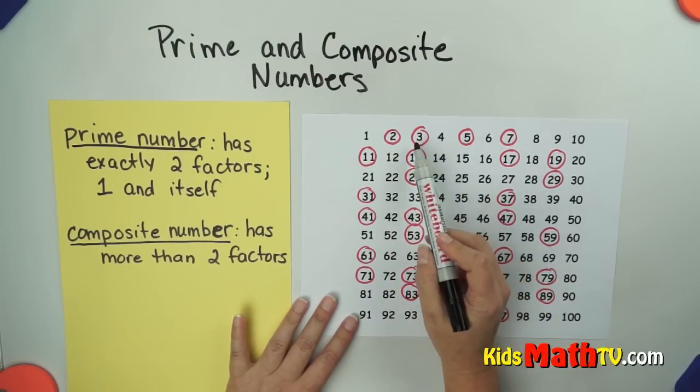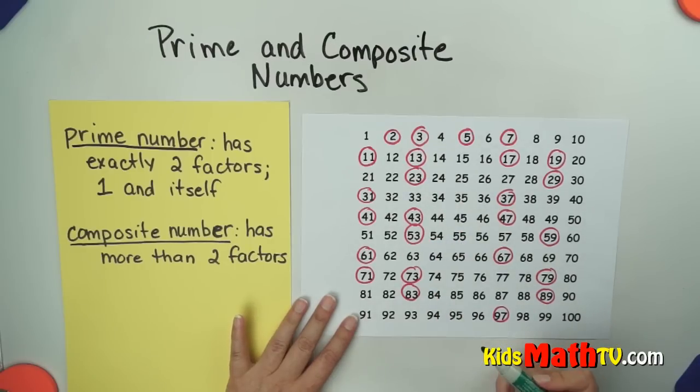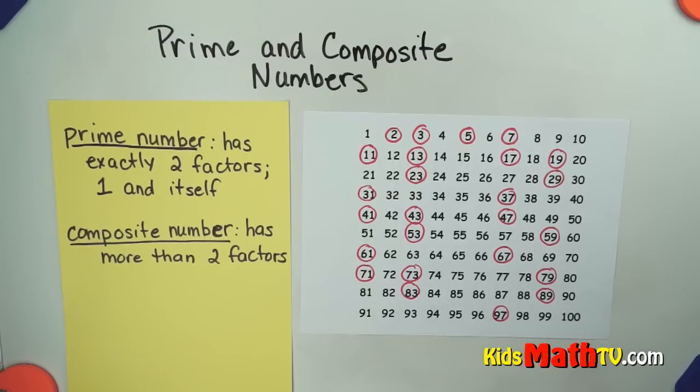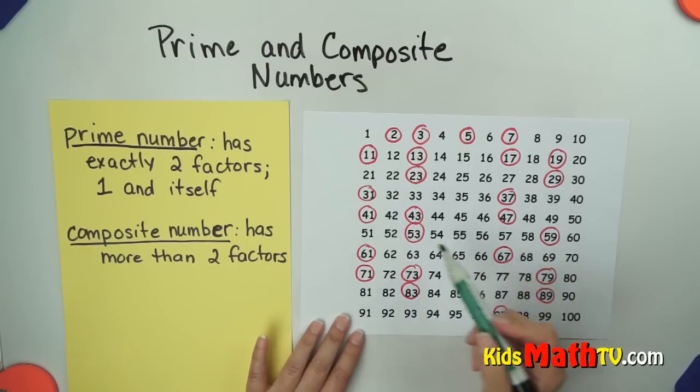Same with three. One times three equals three. There's no other way to multiply two numbers together to make three. And that's the same with all of these numbers that are circled in red.